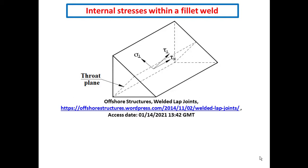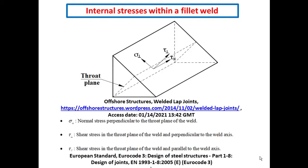These types of stress will create internal stresses within the fillet weld, as indicated by this figure. You can see that the internal stresses are applied on the throat plane of the fillet weld. We distinguish three types of internal stress: sigma perpendicular, which indicates the normal stress perpendicular to the throat plane of the weld; tau perpendicular, which indicates the shear stress in the throat plane and perpendicular to the weld axis; and tau parallel, which indicates the shear stress in the throat plane and parallel to the weld axis. So we have an internal stress state composed of these three types.